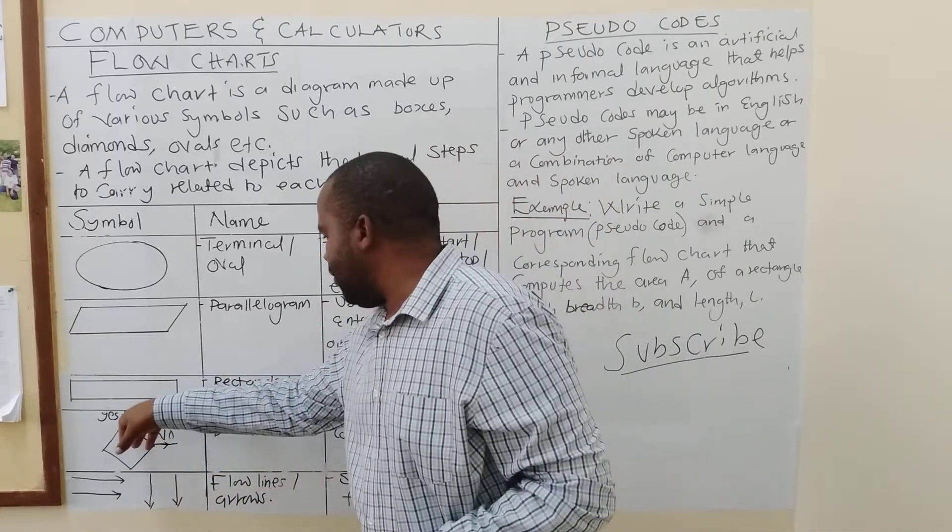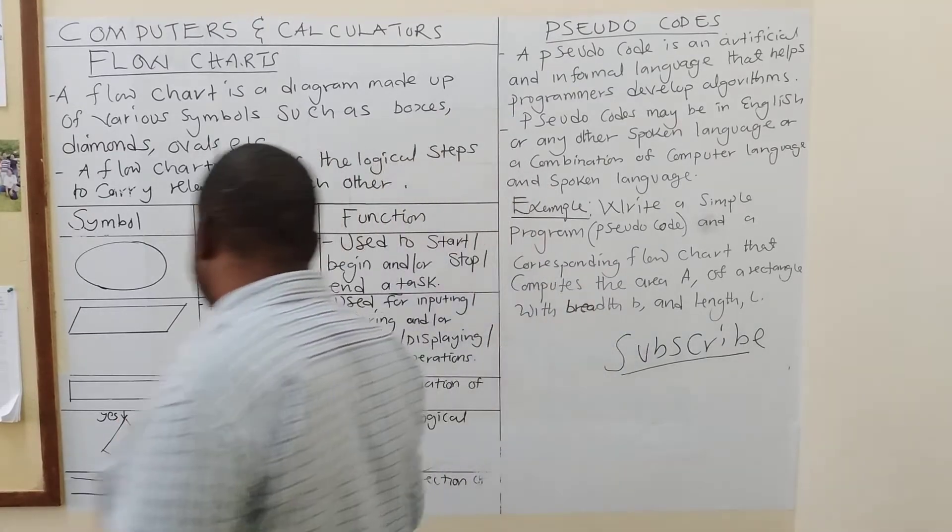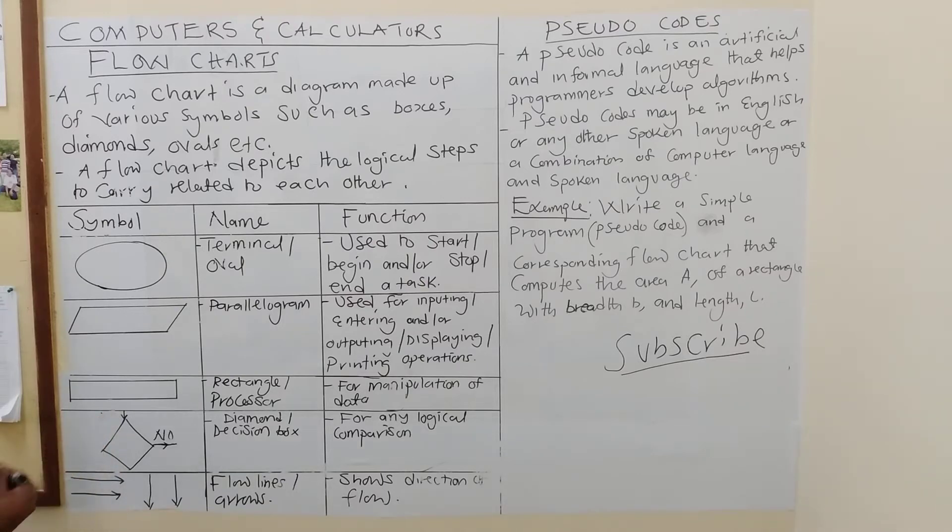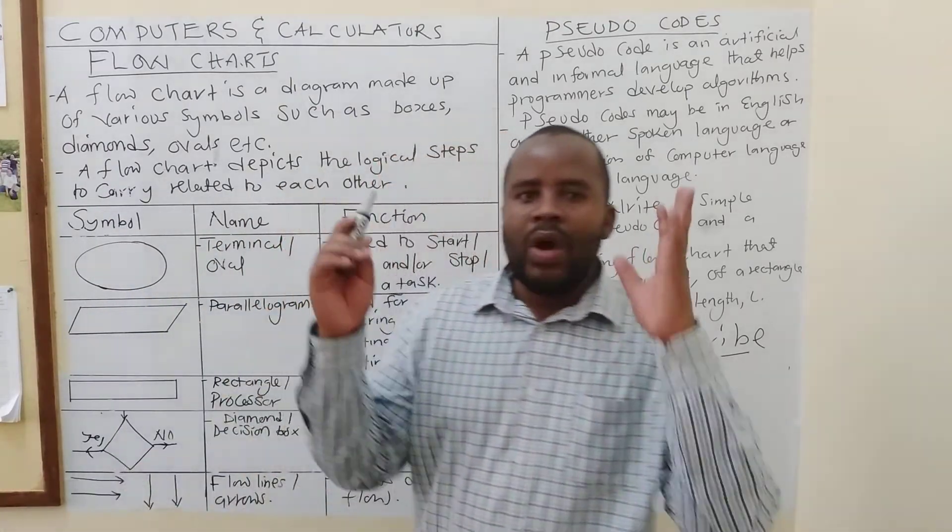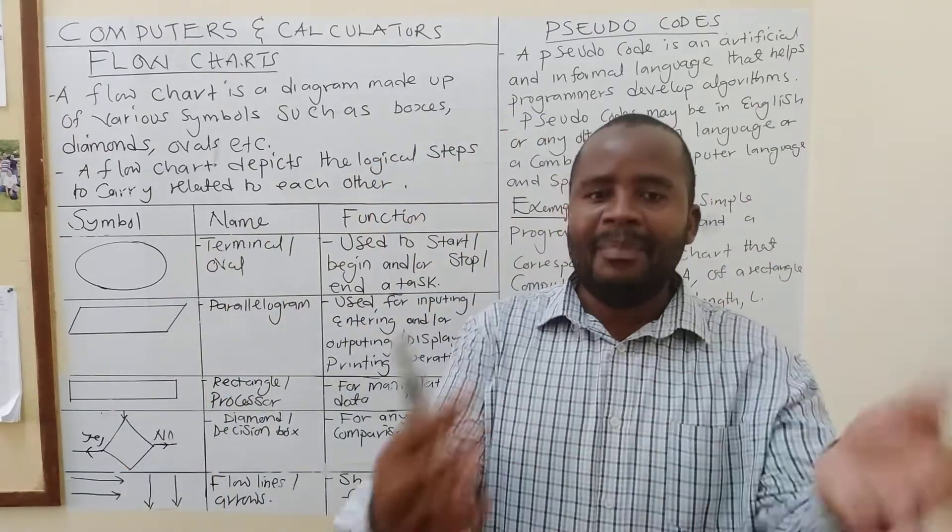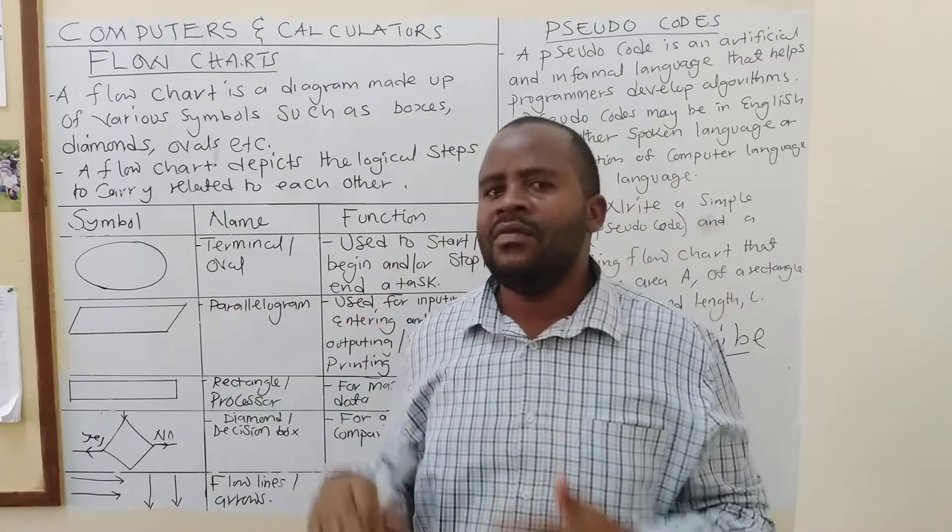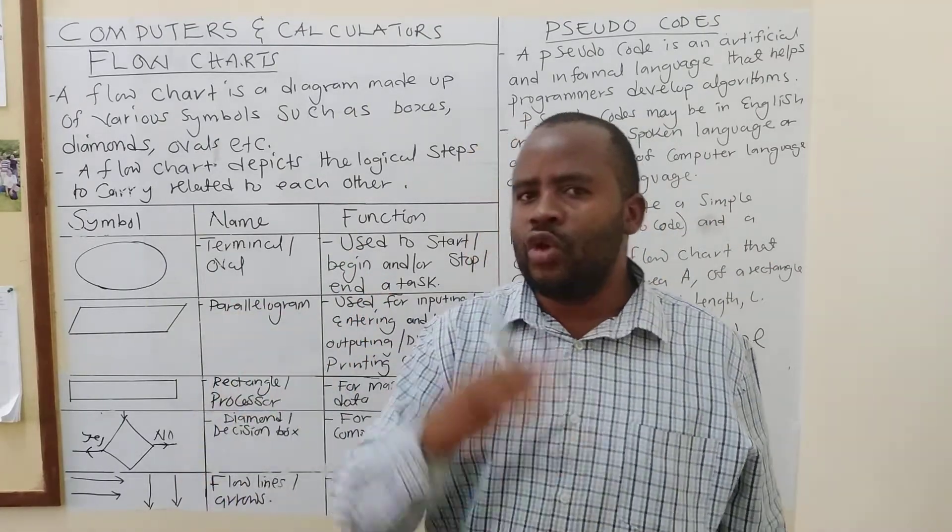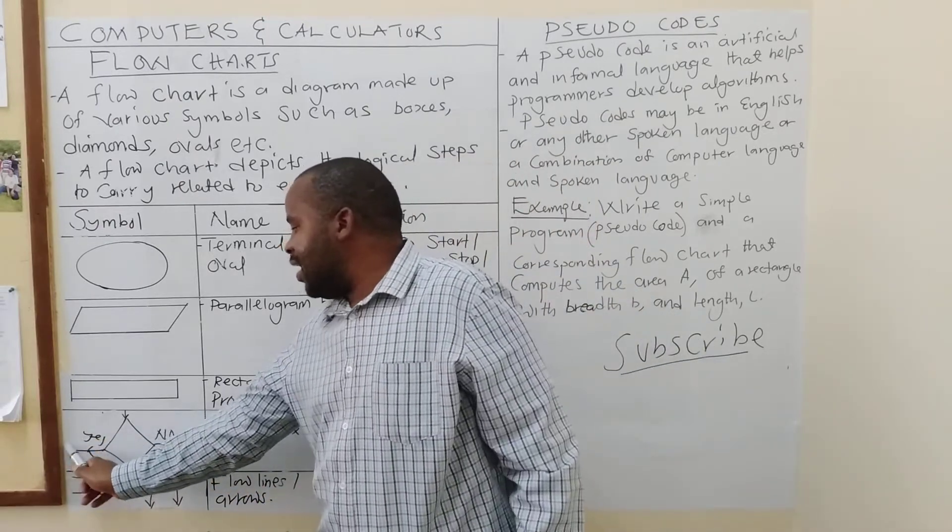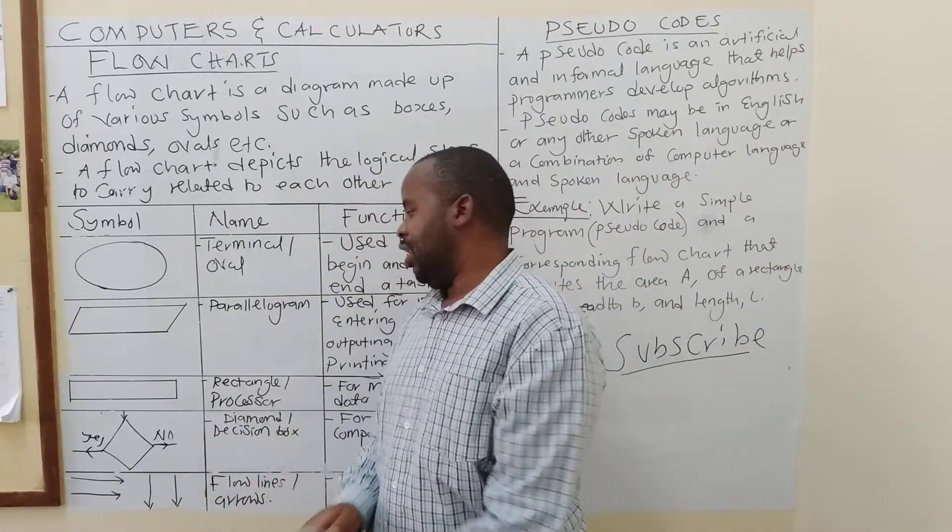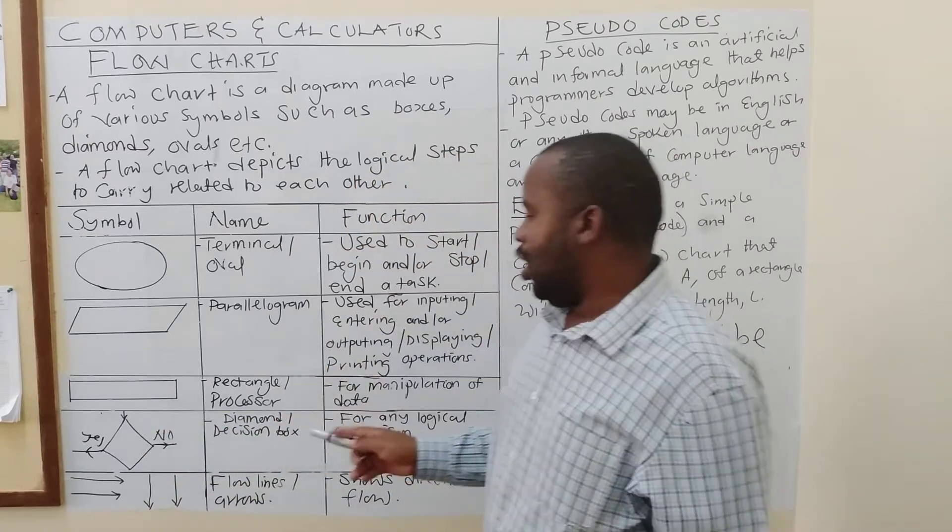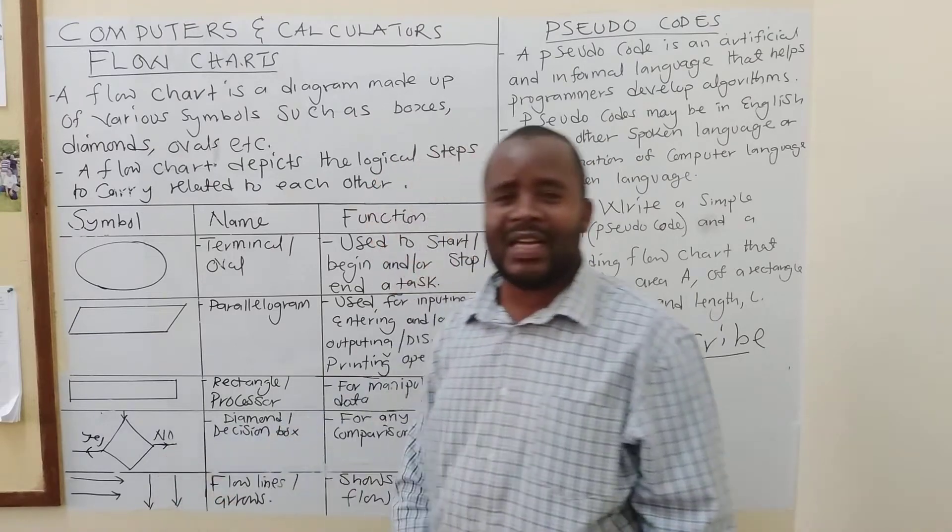So, you start from this point. Maybe we can have here, maybe this arrow going this side. Here is yes. So, yes or no. In here, in this box, we are saying we apply this box when we want to make a decision. For example, you are going to say, is radius less than zero? What do you expect? It is either yes or no, isn't it? So, if it is less, then you must explain what should be done. If it is no, you must explain as well what should be done there in this direction.